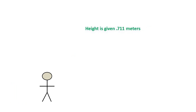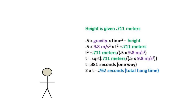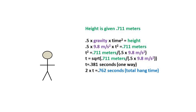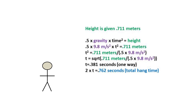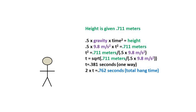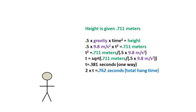Let's first solve the problem as if we only have the height of 0.711 meters. To find the time, we use the position formula and solve for how long it takes the basketball player to fall from the peak. Since initial velocity is zero at the peak, the equation becomes one half gravity times time squared equals height. After plugging in numbers and rearranging, we get 0.381 seconds for the time to fall from the peak. We multiply by 2 to get a total hang time of 0.762 seconds.